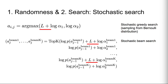We can combine randomness and search methods by adding logistic noise during the search. Adding logistic noise during greedy search is equivalent to sampling from a Bernoulli distribution, as already shown. In the same way, we can derive stochastic beam search by adding logistic noise during beam search.